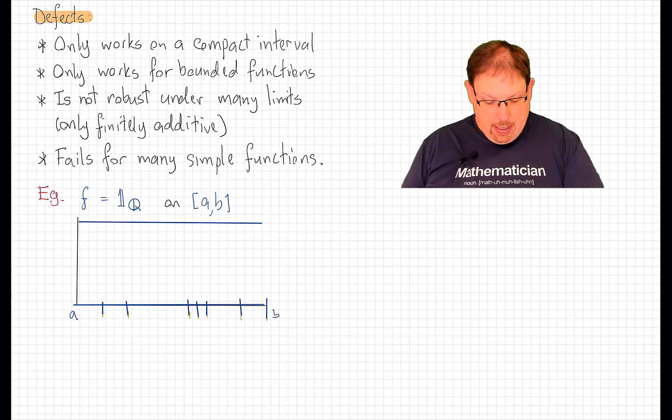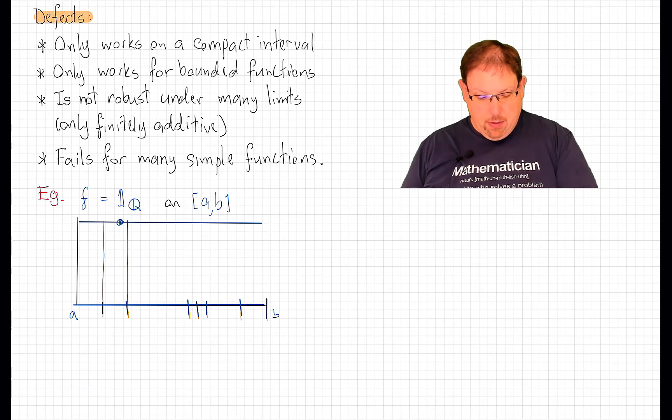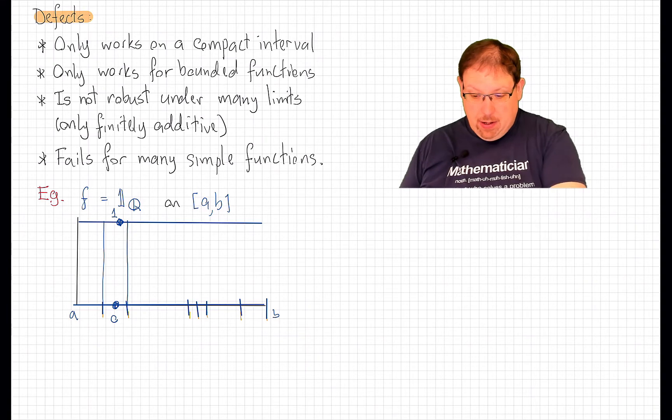I see that on each partition interval the supremum value will be 1 and the infimum value will be 0 because in any interval there are both rational and irrational numbers.